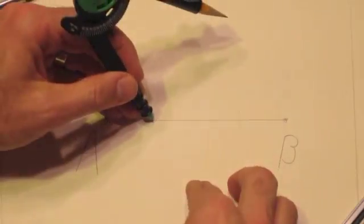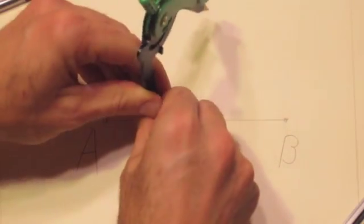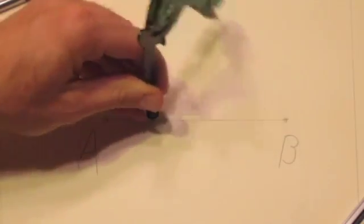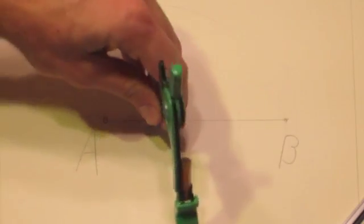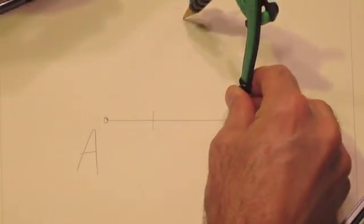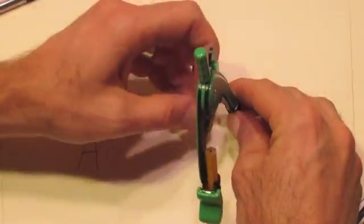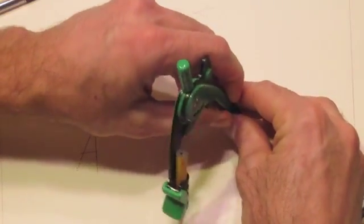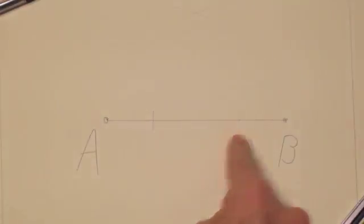And from those two points, you can make another, I call it the football shape that shows the midpoint, an arc above and below from this intersection, and arc above and below from this intersection.